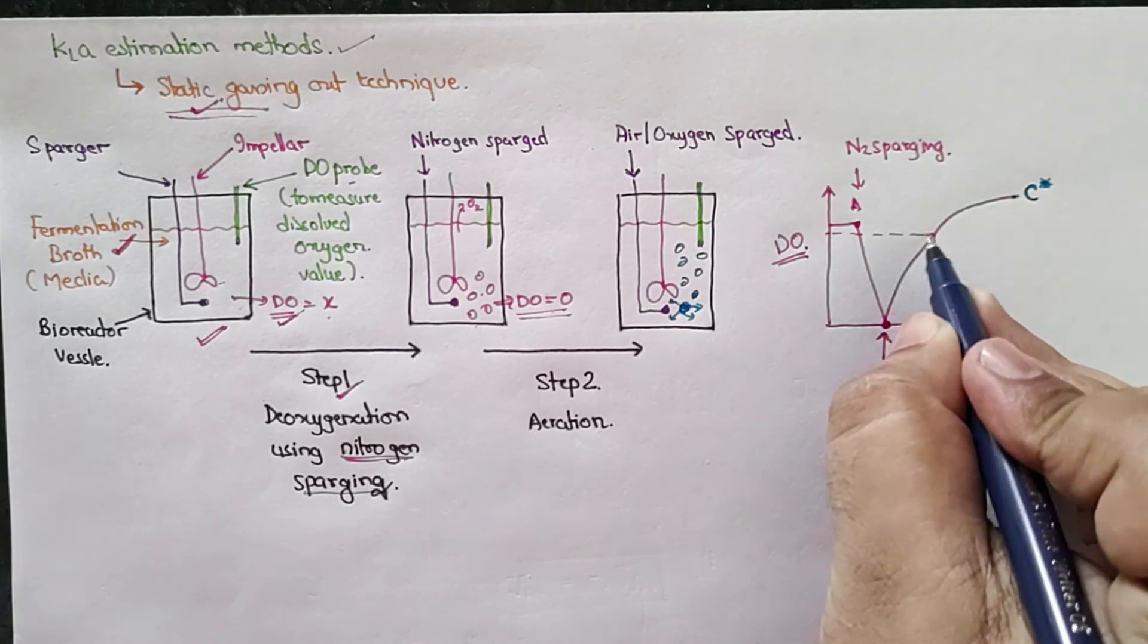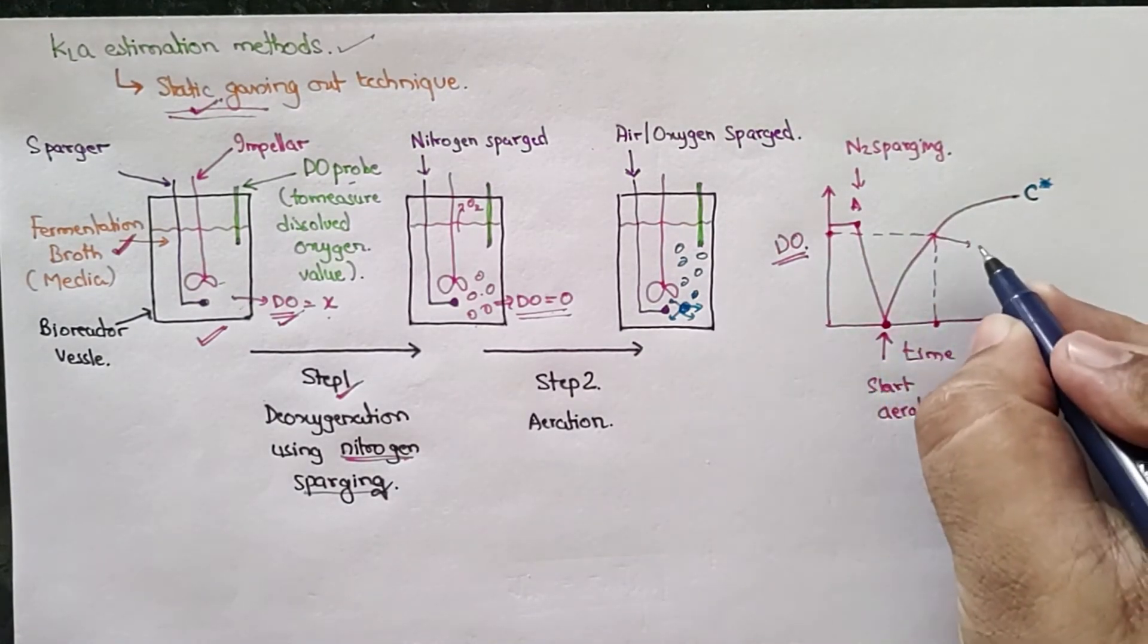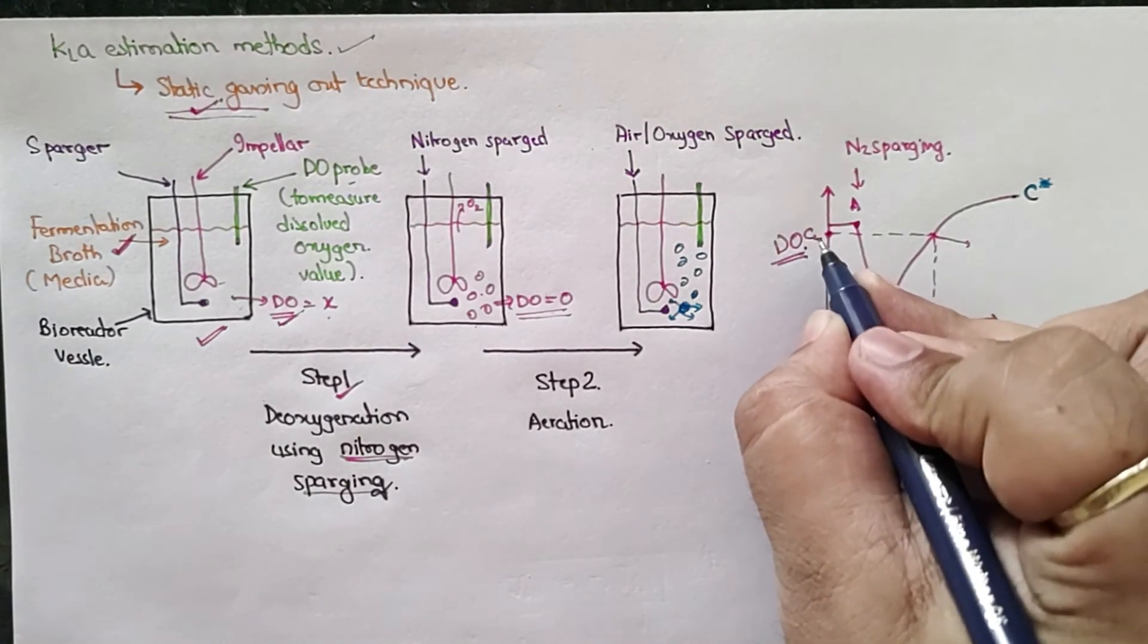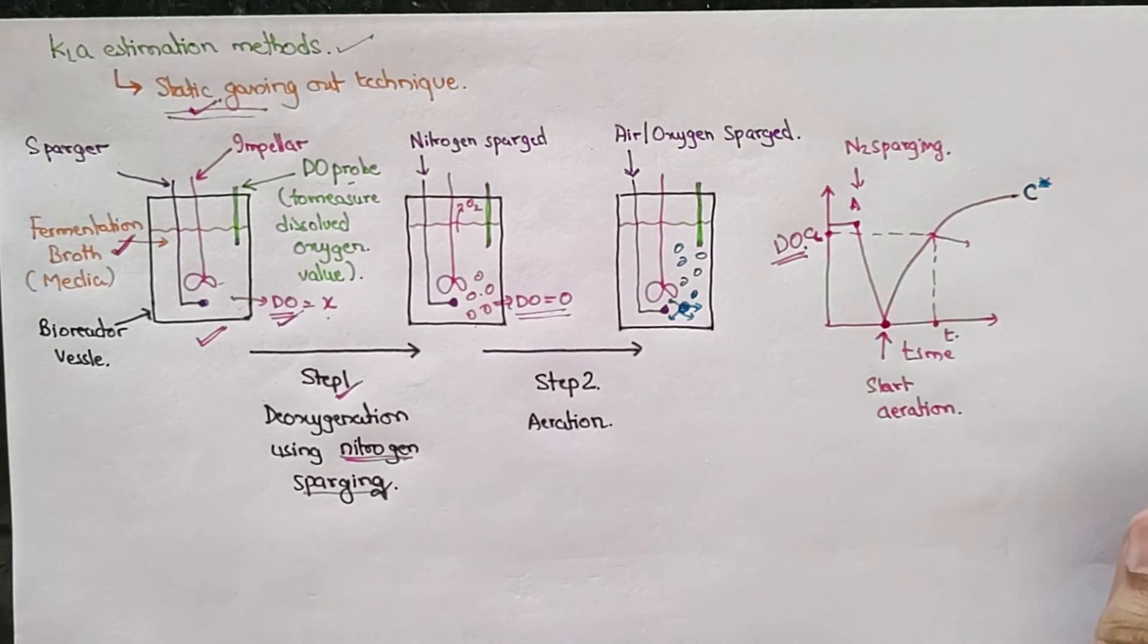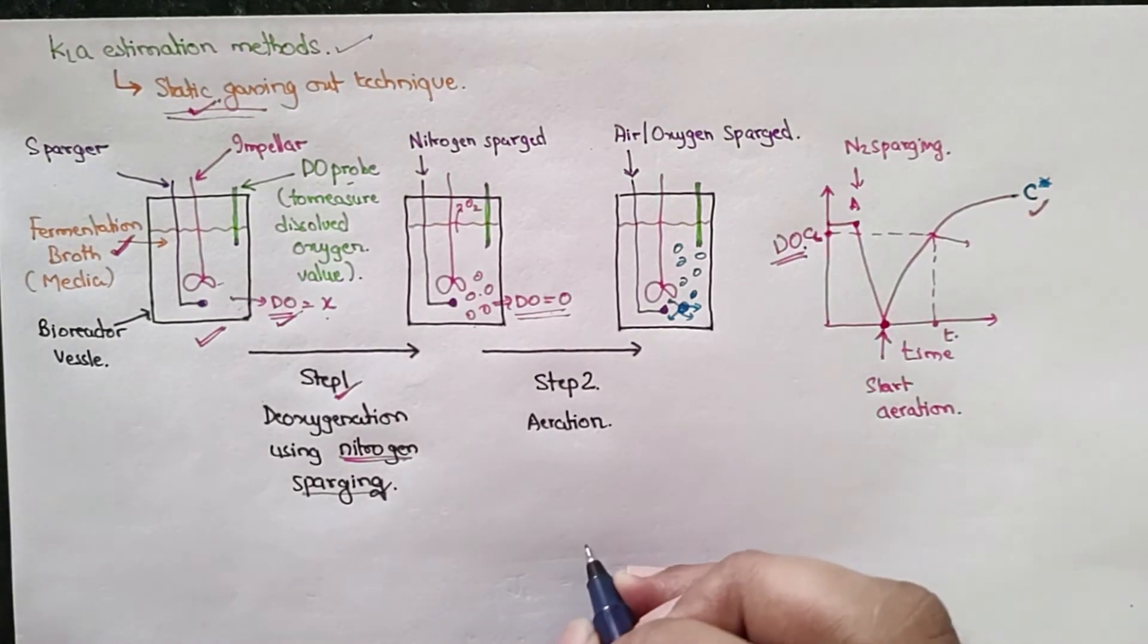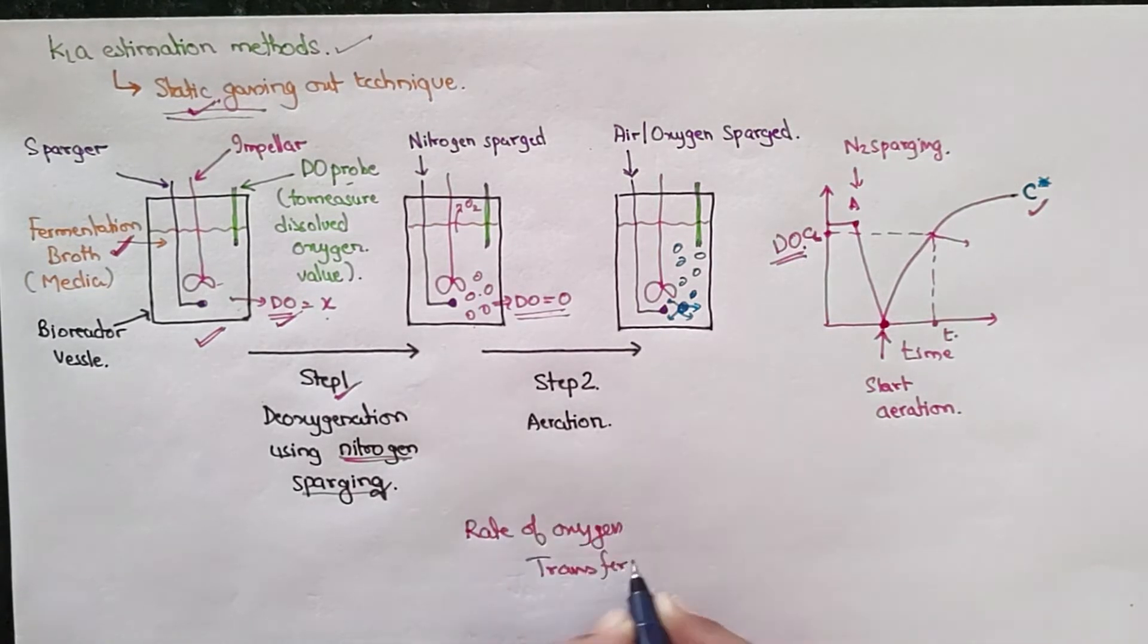So at any point within this graph, let's suppose this is the point—we will call these points as your CL. So this is CL, and this is at time T. So what we can say: the rate of oxygen transfer in the fermentation broth, that is dCL/dt, is equal to